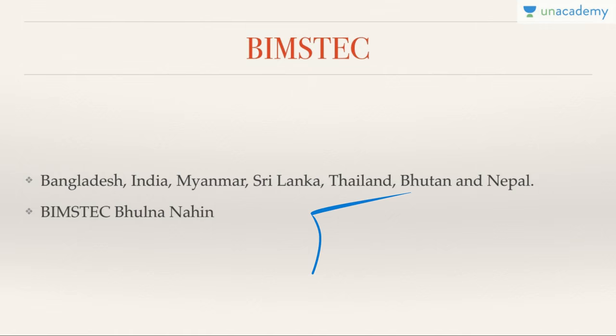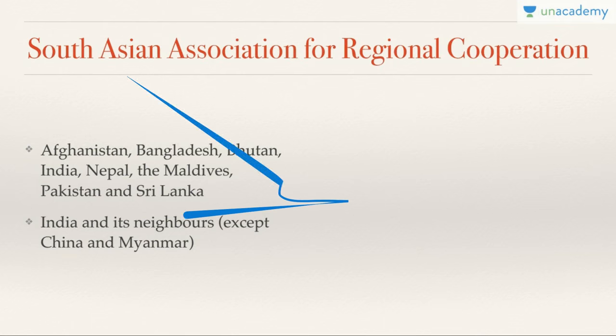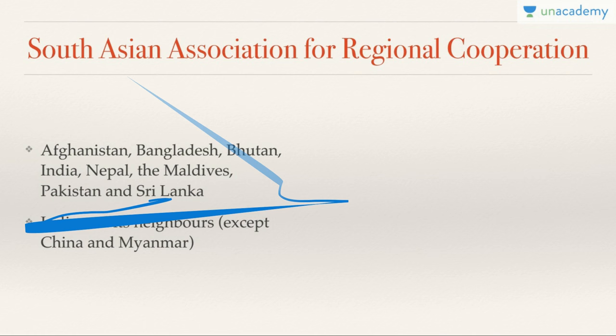For SAARC — South Asian Association for Regional Cooperation — you don't need any mnemonic. Just remember all of India's neighbors except China. Myanmar is already part of ASEAN, so it can't be part of a similar organization. SAARC includes all of India's neighbors with which India shares a maritime or land boundary, except Myanmar and China.